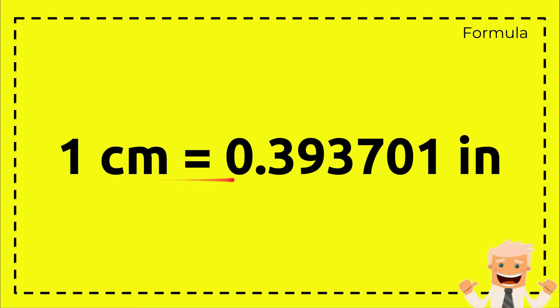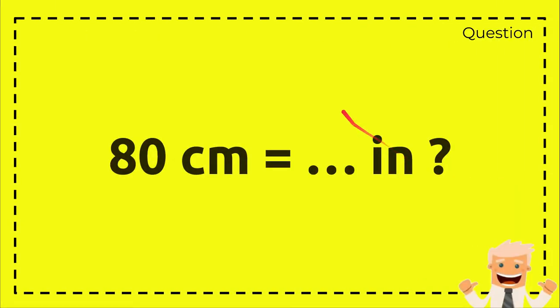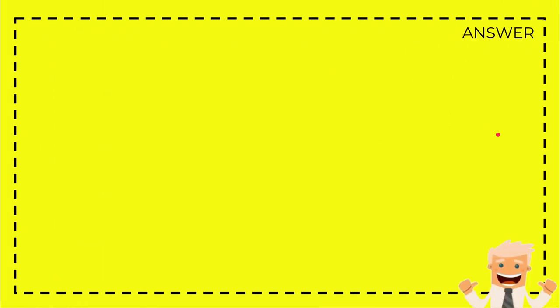So this is the formula: 1 centimeter equals 0.393701 inches. And this is the question. I just write the question again: 80 centimeters equals how many inches? Okay that's the question, and here's the answer section.